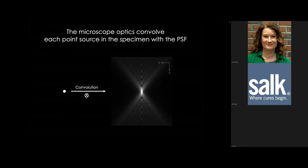We've discussed what the microscope does to a single point source and to two point sources, but in a biological specimen you have many point sources — fluorophores. What the PSF does to the entire optical image is called a convolution operation: every point source of light in your specimen is convolved with the PSF. You can think of this as stamping the PSF on top of every point source.